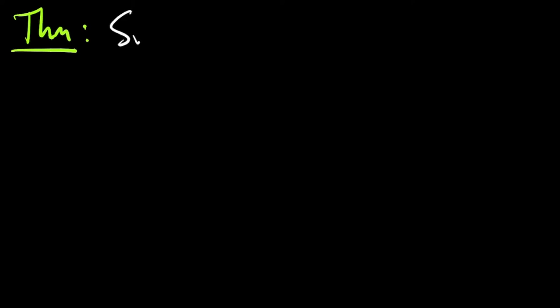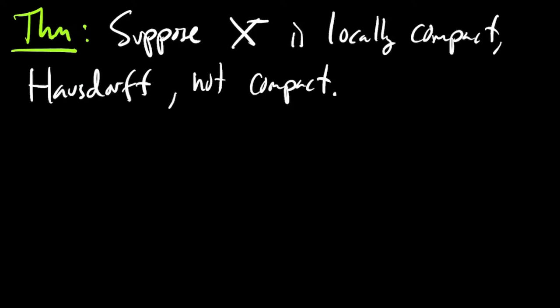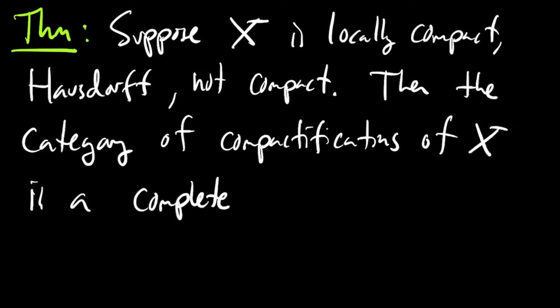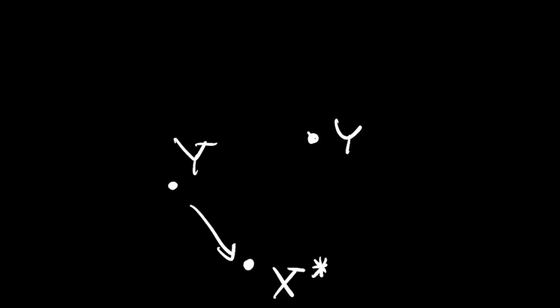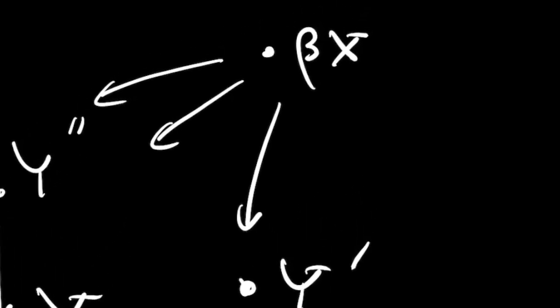So if X is locally compact Hausdorff and not compact, then the category of compactifications of X is more than just a partially ordered set — it has a smallest element, the one-point compactification. In fact, the theorem is that the category of compactifications is a complete lattice. Here's the picture you should have in mind: every other compactification maps to the one-point compactification, and there's a largest compactification, denoted beta X, called the Stone-Čech compactification, that maps to every other compactification.